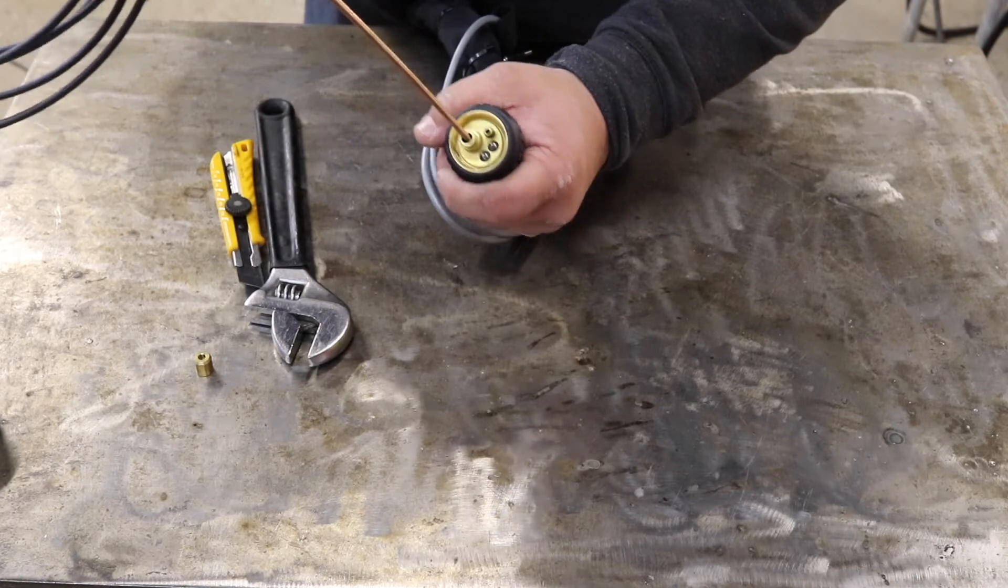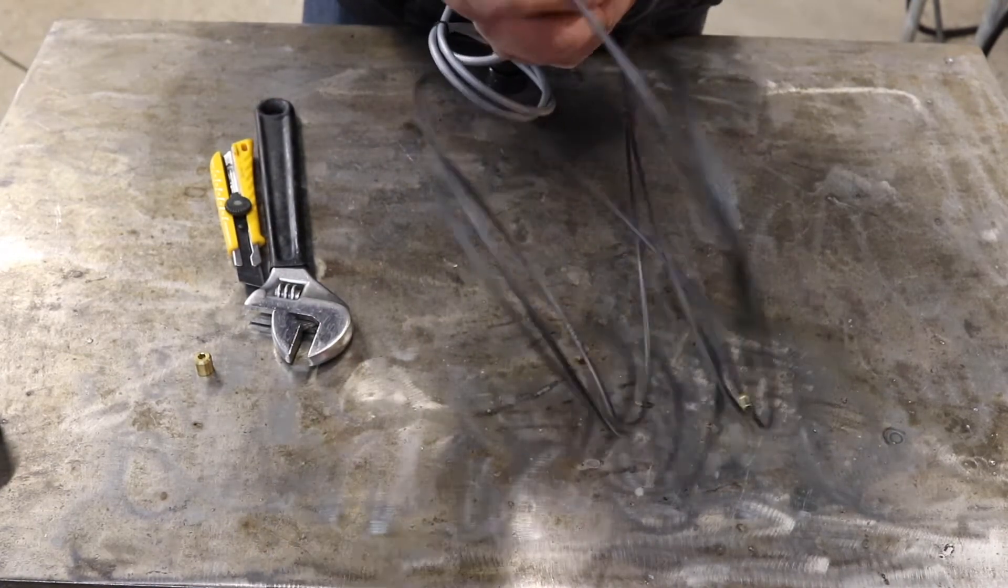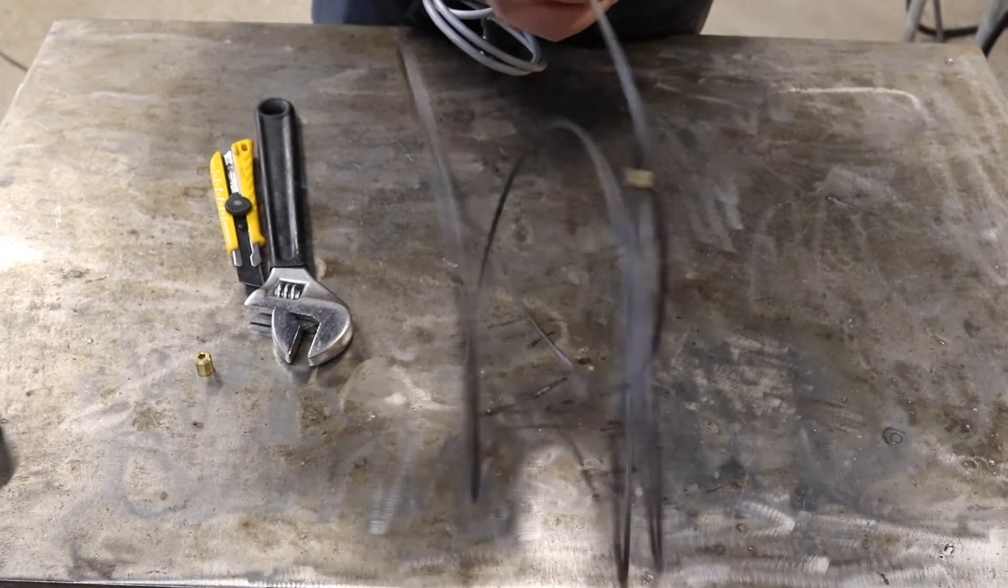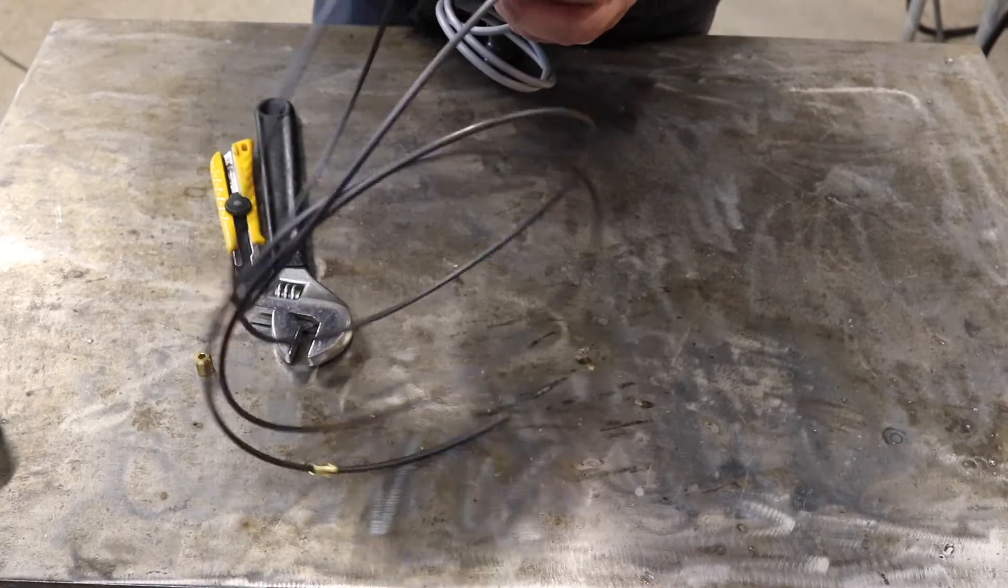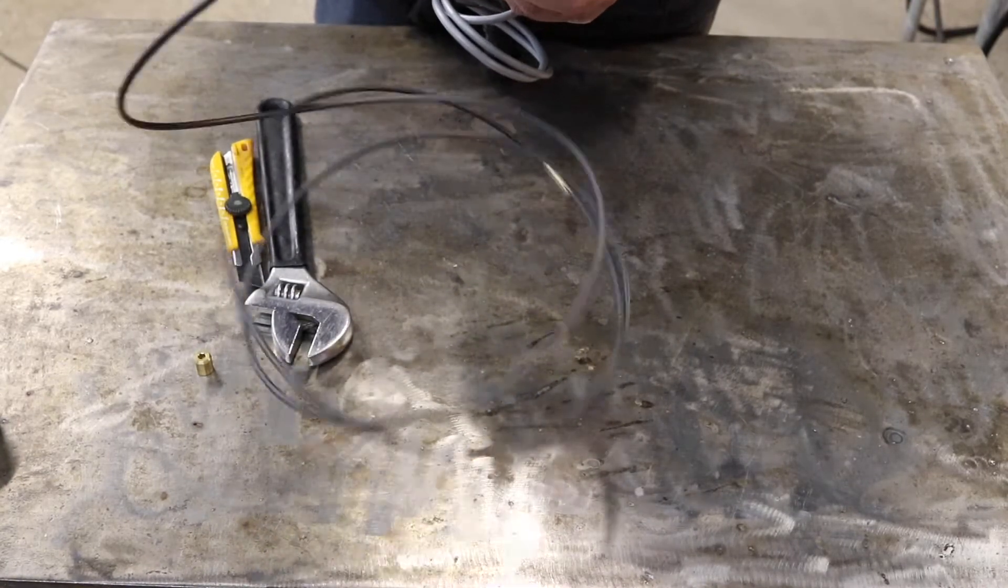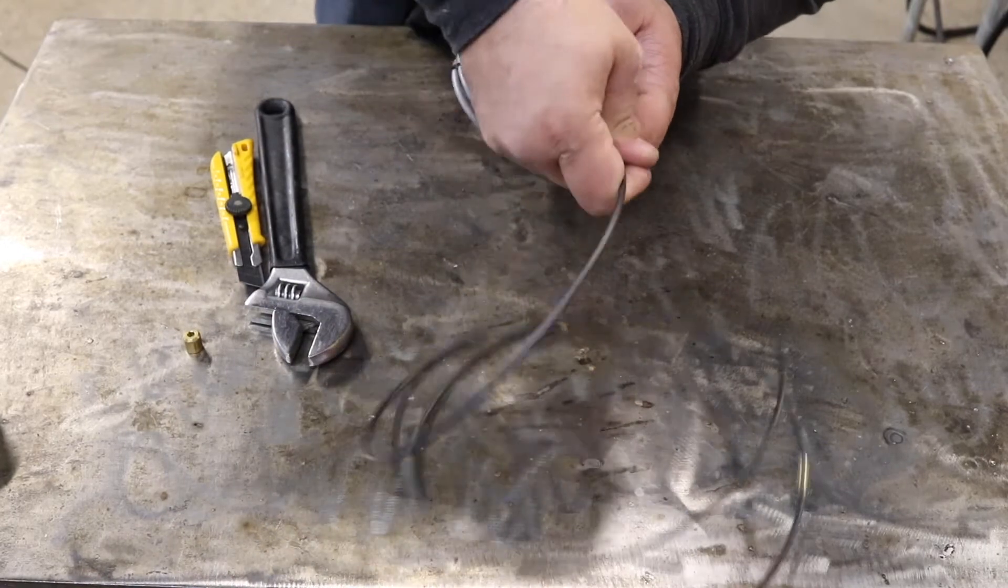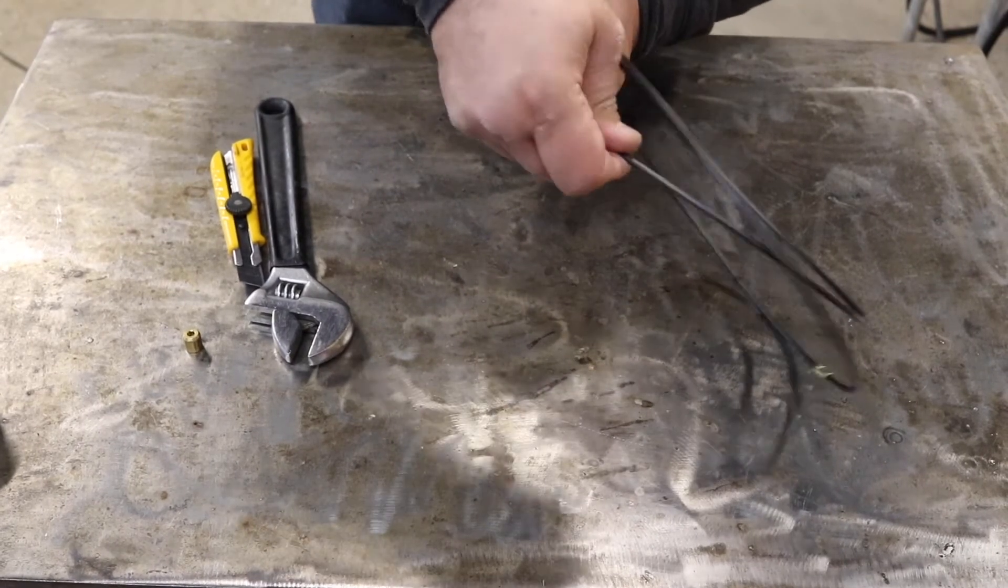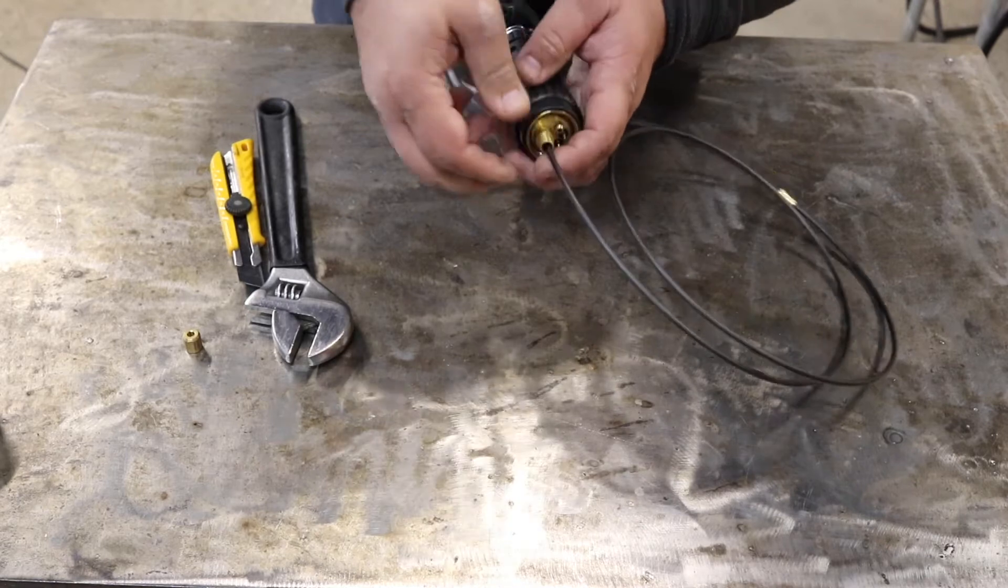Feed the new liner in to the front. If you have your consumables still installed, you can only feed it up to the tip holder, which will be about the perfect length. Right there. You hear it bottoming out.